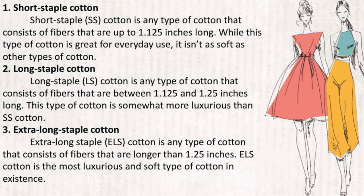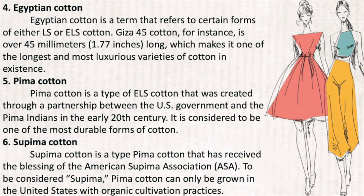Extra-long staple (ELS) cotton consists of fibers longer than 1.25 inches and is the most luxurious and soft type of cotton in existence. Egyptian cotton is a term that refers to certain forms of either LS or ELS cotton — for instance, Giza 25 cotton is over 25 millimeters (1.77 inches) long, making it one of the longest and most luxurious varieties in existence. Pima cotton is a type of ELS cotton created through a partnership between the US government and the Pima Indians in the early 20th century, and is considered to be one of the most durable forms of cotton.